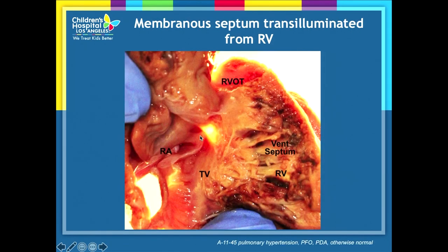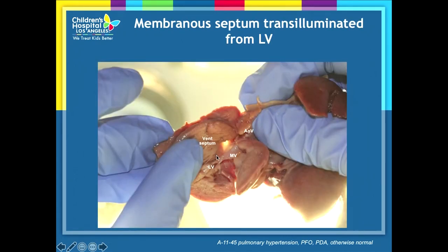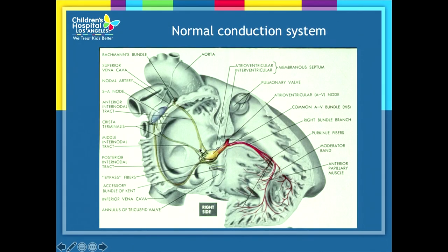The membranous septum is the thinnest portion of the septum and the most prone to defects — about 80% of defects. Here is an actual specimen transluminated: you can see the membranous septum very nicely, with the conduction system traveling right underneath it. Looking from the left ventricular side, the membranous septum sits right beneath the commissure between the right and non-coronary cusps, very close to the aortic valve. The normal conduction system traverses underneath or posterior to the membranous septum, and that is usually the case for most of the VSDs we are discussing.